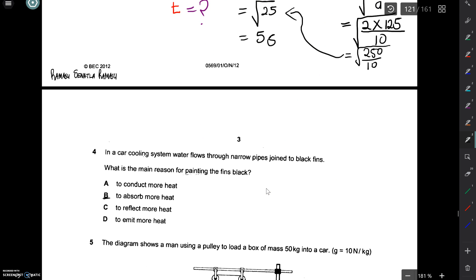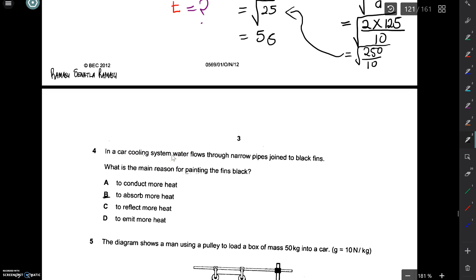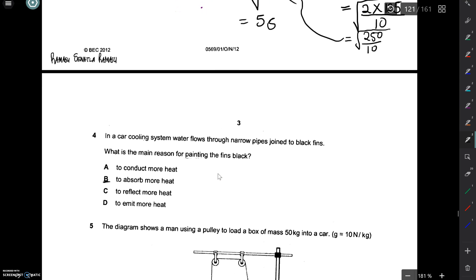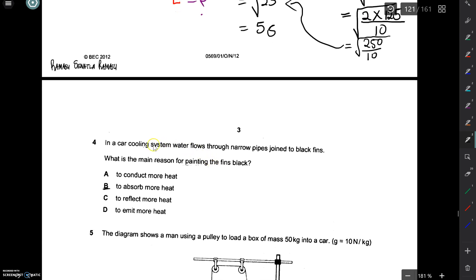Question 4 says. In a car cooling system, water flows through narrow pipes joined to black fins. What is the main reason for painting the fins black? Well, in the radiator, the fins are painted black to emit more heat.